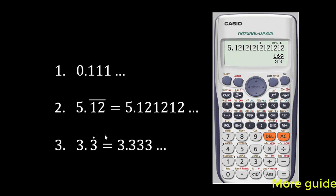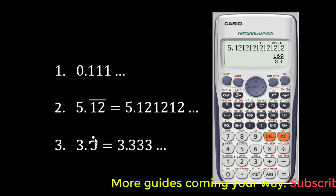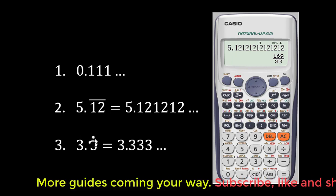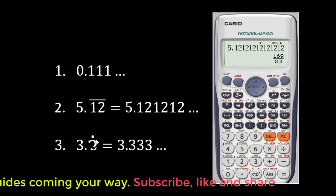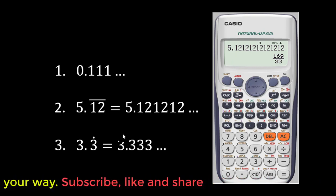Now let's move to the last one. So when you see 3.3, that is with an accent, a dot accent above the number 3, it means the 3 is repeating. So it's the same thing.